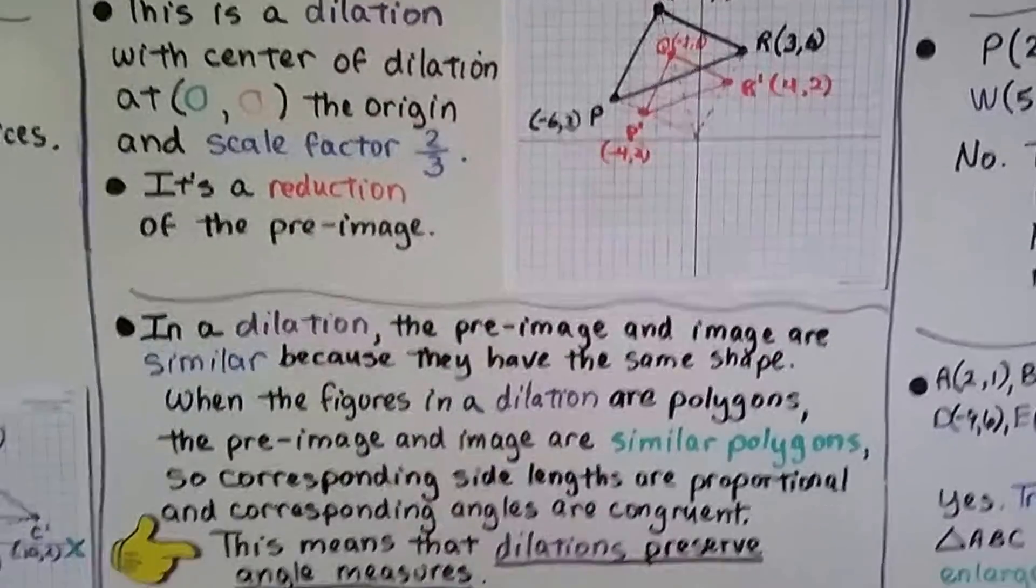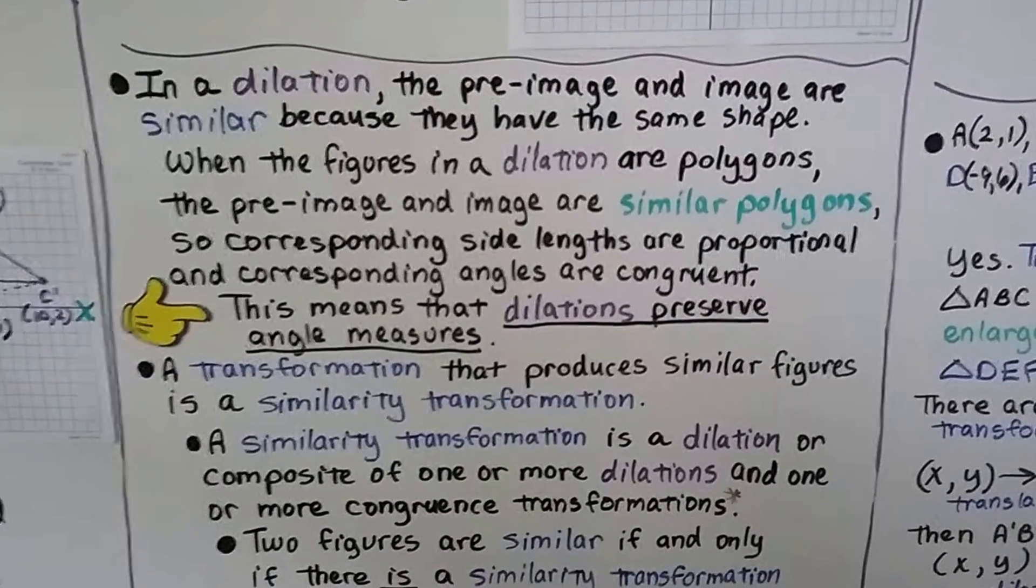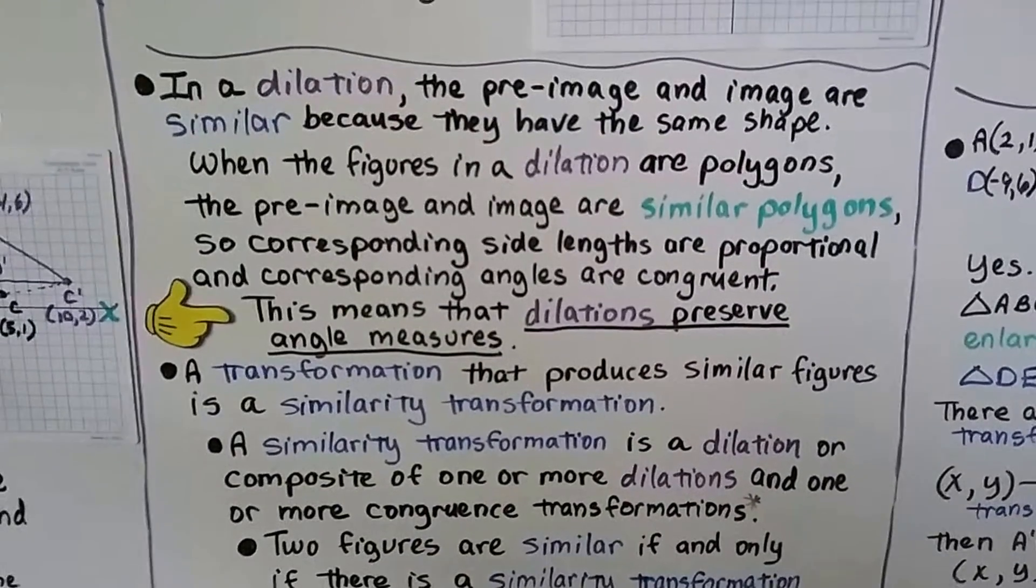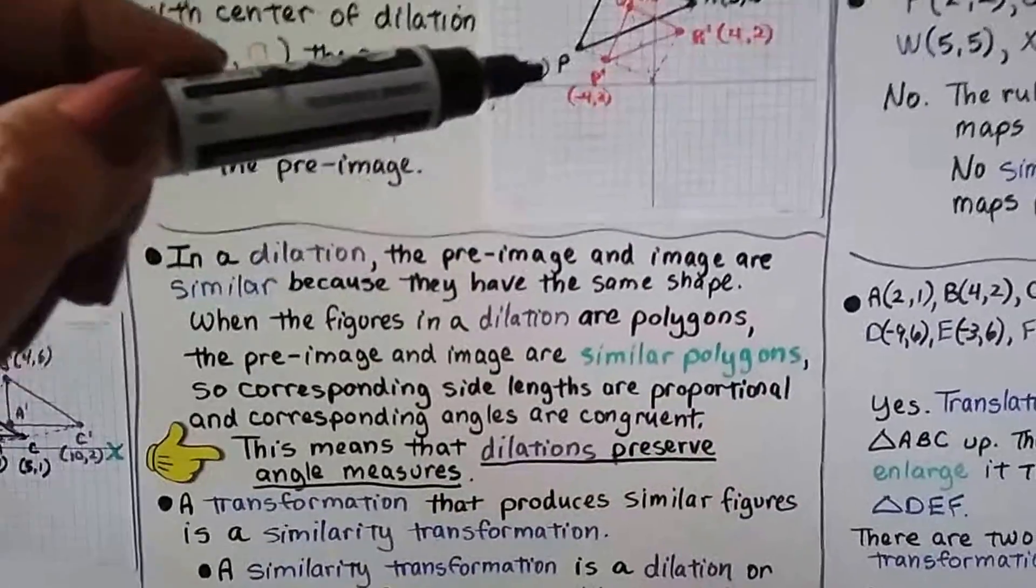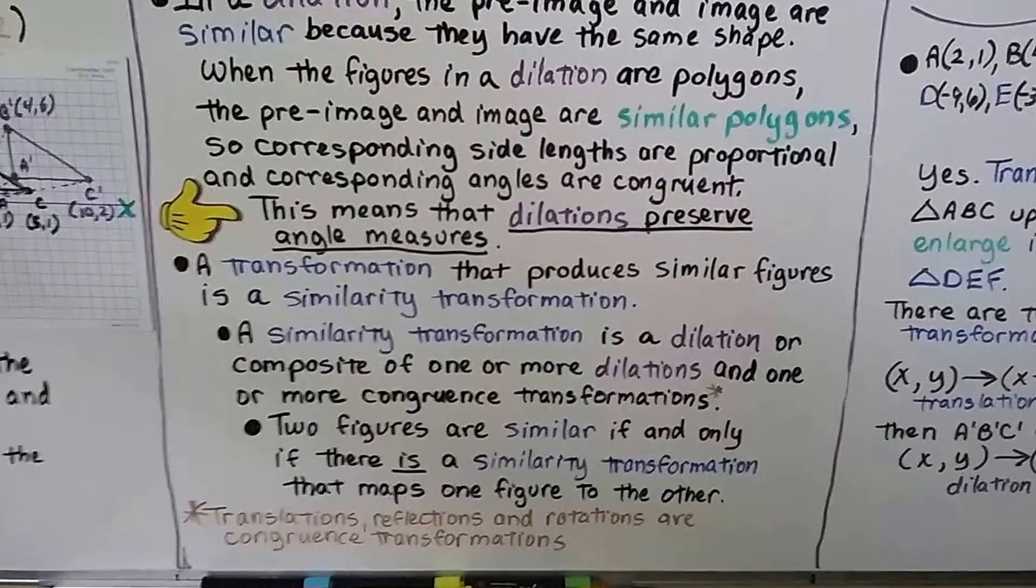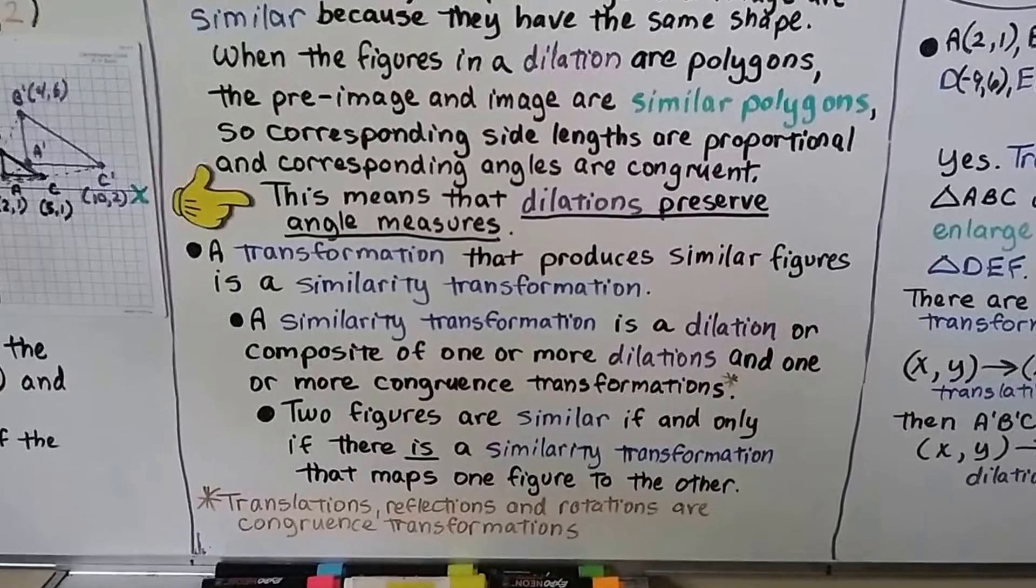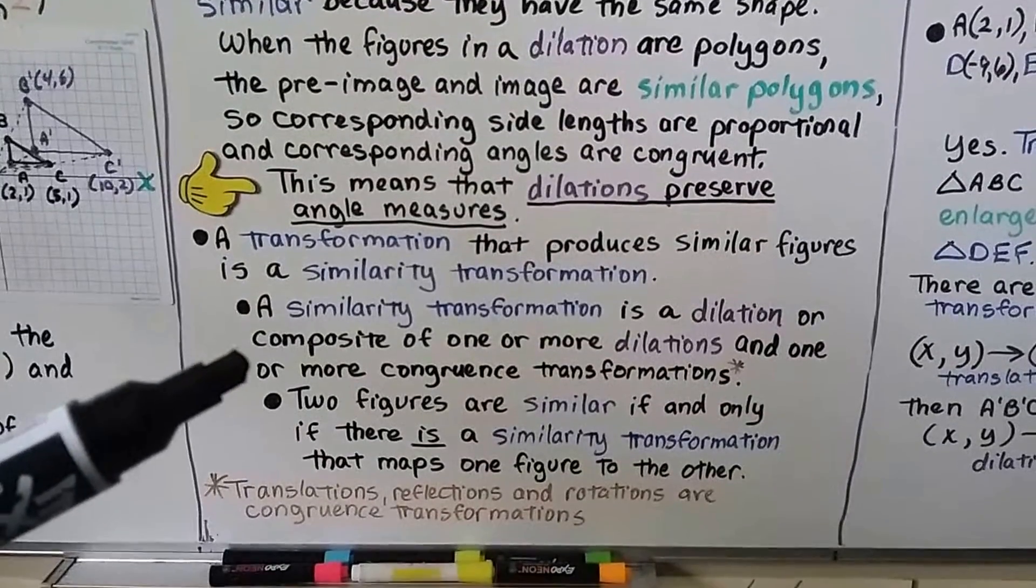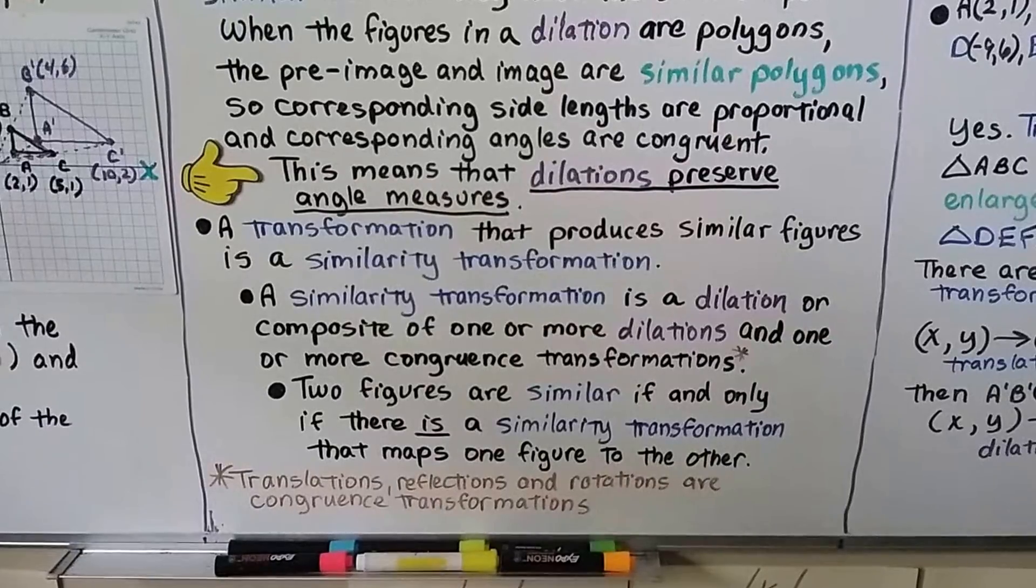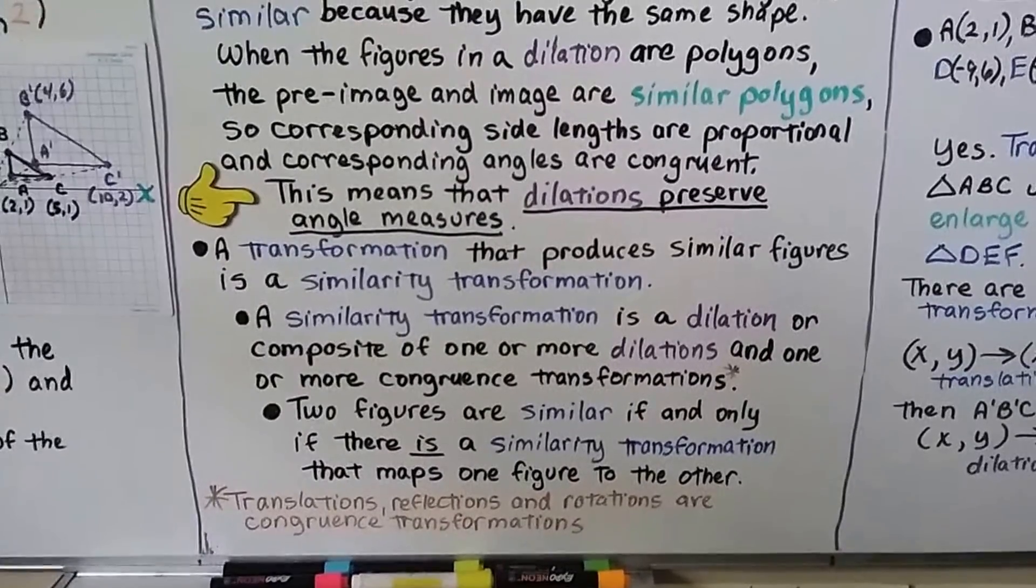In a dilation, the preimage and image are similar because they have the same shape. When the figures in a dilation are polygons, the preimage and image are similar polygons. So corresponding side lengths are proportional and corresponding angles are congruent. This means that dilations preserve angle measures. So the angle measure of P is the same as the angle measure for P prime. And a transformation that produces similar figures is a similarity transformation. A similarity transformation is a dilation or composite of one or more dilations and one or more congruence transformations. Those are translations, reflections, rotations. Those are slides, flips, and turns. And two figures are similar if and only if there is a similarity transformation that maps one figure to the other.